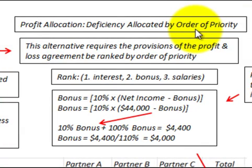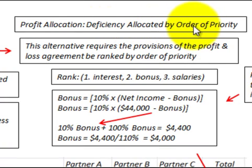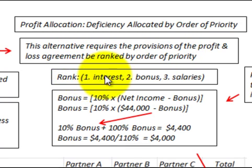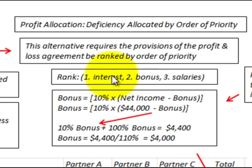We're going to be looking at a partnership allocation of profit deficiencies, and the method we're going to use is an alternative method — a profit allocation method where the deficiency is allocated by order of priority. This method requires that the provisions of the profit and loss agreement be ranked by priority. The partnership will be paying interest, bonuses, and salaries, ranked as follows: first, interest on excess capital; second, bonuses; third, salaries.